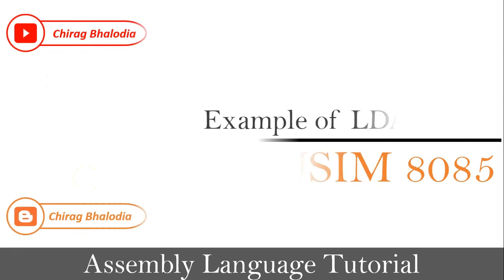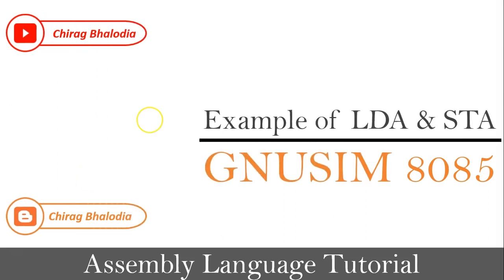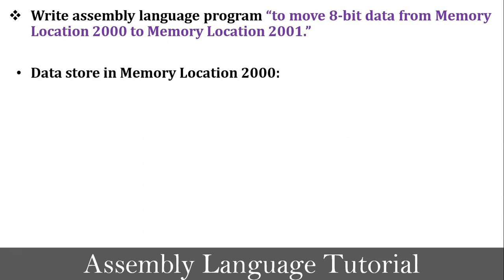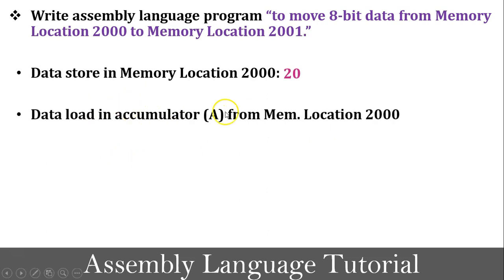The next topic is an example of LDA and STA instruction. To understand LDA and STA, let's take one program definition: write an assembly language program to move 8-bit data from memory location 2000 to memory location 2001. Before writing the code, our first task is to build the logic. As per the definition, data is stored at memory location 2000 — I will store value 20 there. The next task is to load data into the accumulator from memory location 2000, because there is no direct instruction to exchange data between two memory locations.